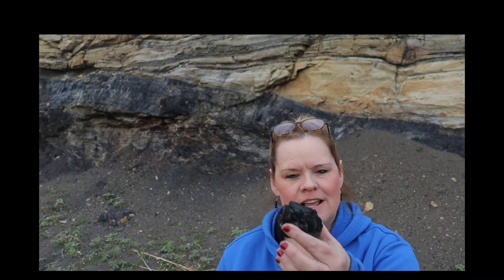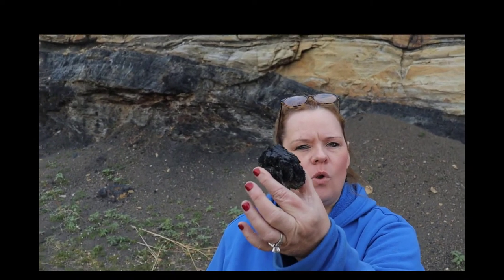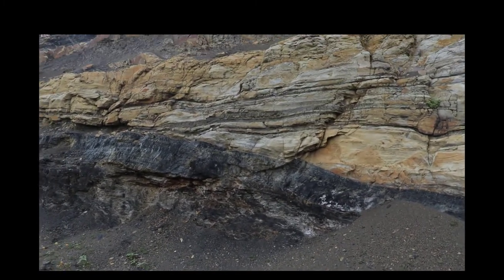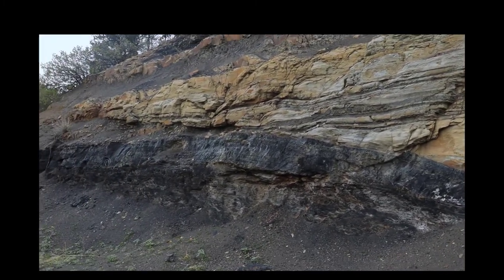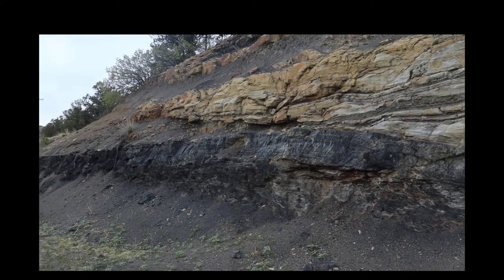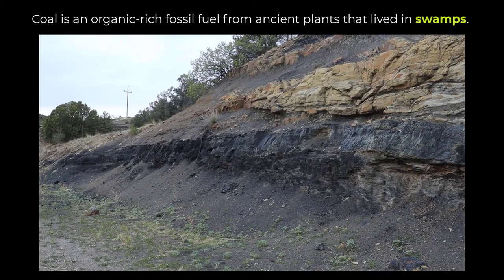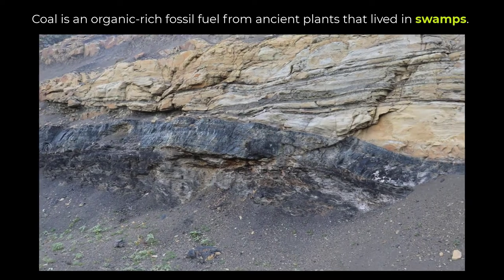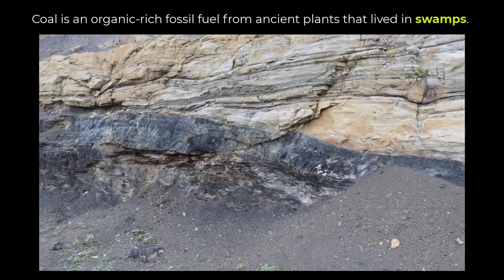We're at Trinidad State Park and I want to point out some really cool things. I'm holding some coal — that is a fossil fuel — and you can see a seam of it here. Coal is mined from seams like this, and what does that represent? It represents a swamp environment.